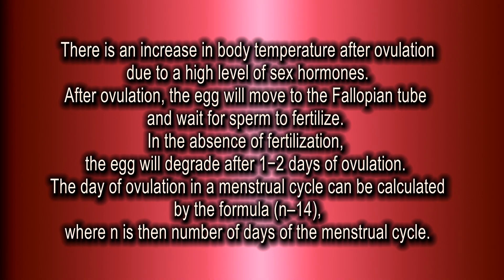There is an increase in body temperature after ovulation due to high levels of sex hormones. After ovulation, the egg moves to the fallopian tube and waits for sperm to fertilize it. In the absence of fertilization, the egg degenerates within one to two days. The day of ovulation in a menstrual cycle can be calculated using the formula N minus 14, where N is the total number of days in the menstrual cycle.